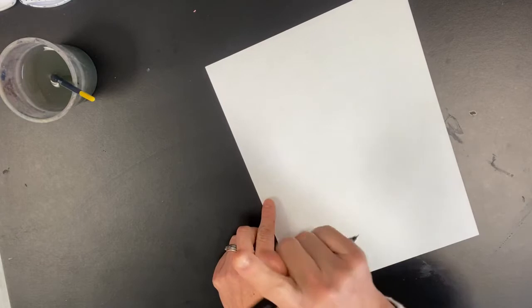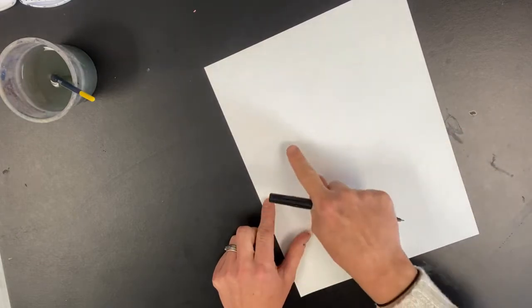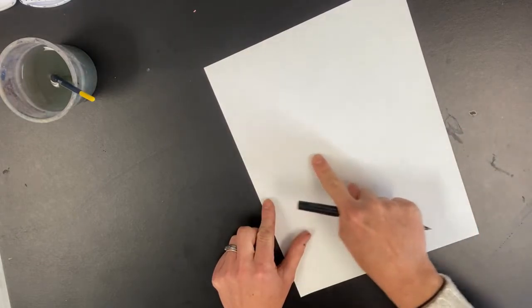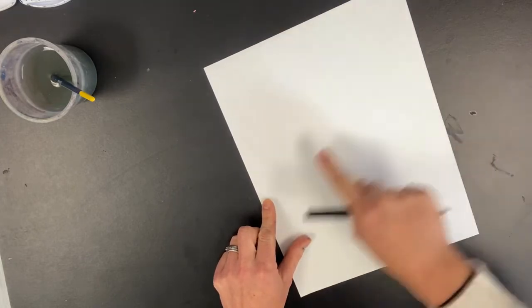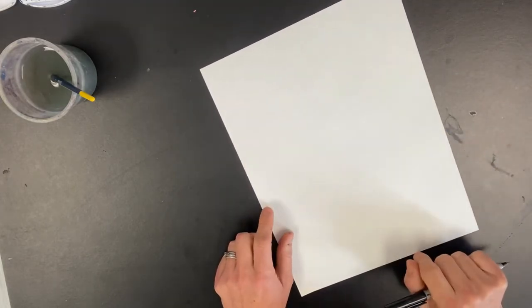So today we're going to talk a lot about curved lines. When I say curved, it's going to almost make you think of a smile line, not a big smile, but a gentle smile. Almost like a little smirk.